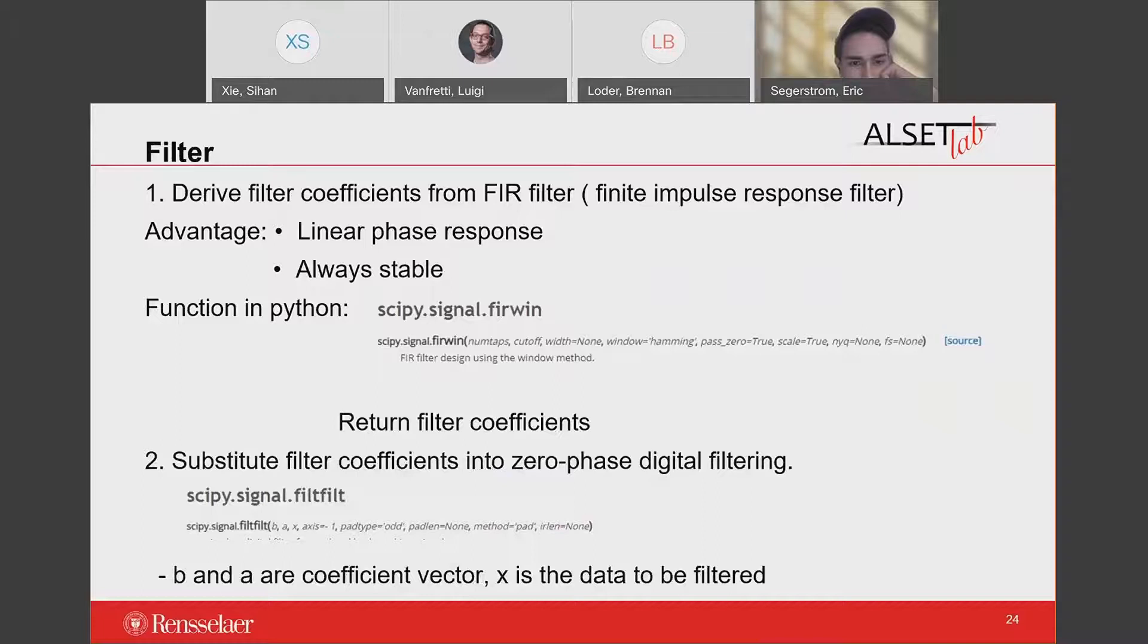The last step to pre-process the data is to filter the signal. In this case, we are going to use the high-pass filter because we want to eliminate some low-frequency noise and give prominence to the fluctuations of high-frequency signals. We first calculate the filter coefficient through the high-pass FIR filter since its stability, then the signal can be filtered through zero-phase digital filtering by substituting the data and the coefficients vector into the function. The zero-phase digital filtering is preferred because it can reduce signal noise and produce zero-phase distortion. These are the steps to perform data processing.